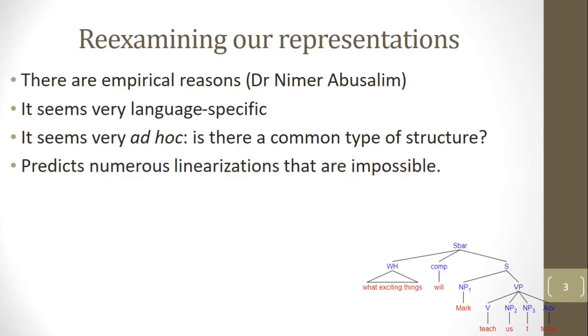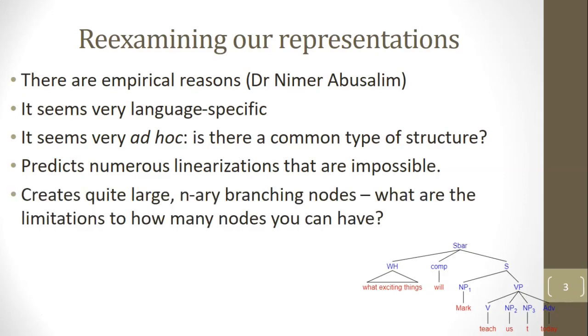These trees also predict numerous linearizations that are impossible and this stems from the fact that any node can break up into a number of different branches. So if you look at the tree on the slide the verb phrase breaks into a verb noun phrase one noun phrase two and an adverbial. The fact that these are all branching at the same level implies that these branches can be switched around but that would clearly yield incorrect results. So for instance it would not be possible to take the verb and swing it around to the end of the verb phrase yielding something like what exciting things will Marcus today teach. Linked to this is that the structures we've been creating can end up with quite large N-ary branching nodes. So we could end up with two nodes, three nodes, eight, ten. Are there any limitations to how many nodes you can have? Surely a million would be too much. So if our sentence tree as it currently stands is a hypothesis about universal grammar there are a number of shortcomings.